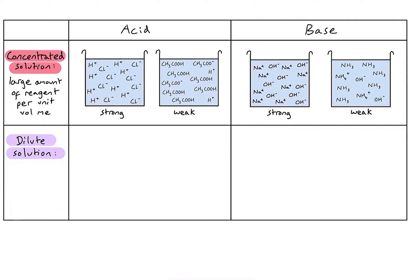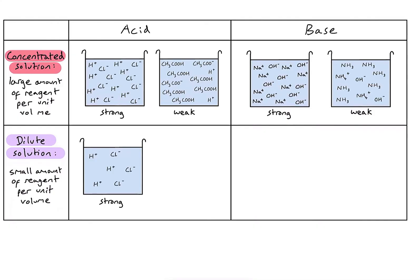A dilute solution is simply the opposite of a concentrated solution — it means we've got a very small amount of reagent per unit volume. For a dilute solution of hydrochloric acid, there is much less HCl dissolved in the water, but because it's a strong acid, all of those molecules — which is only a small number in this case — have actually dissociated. For a dilute solution of the weak acid ethanoic acid, there's not very much in the solution, and only one of those three molecules has actually ionised.